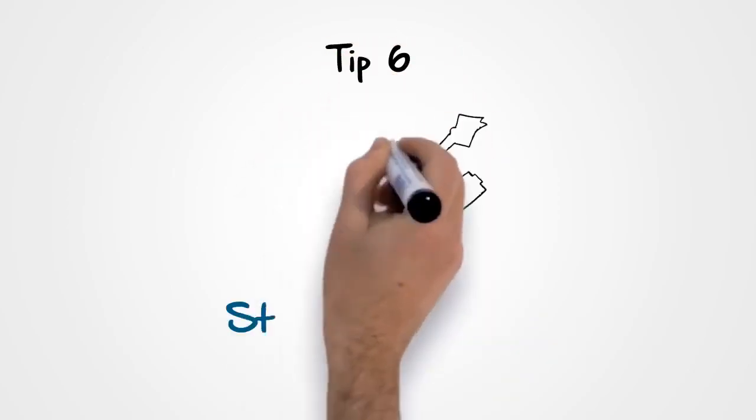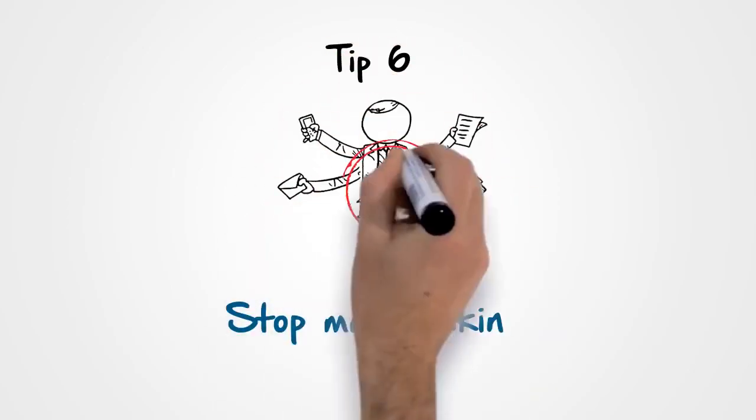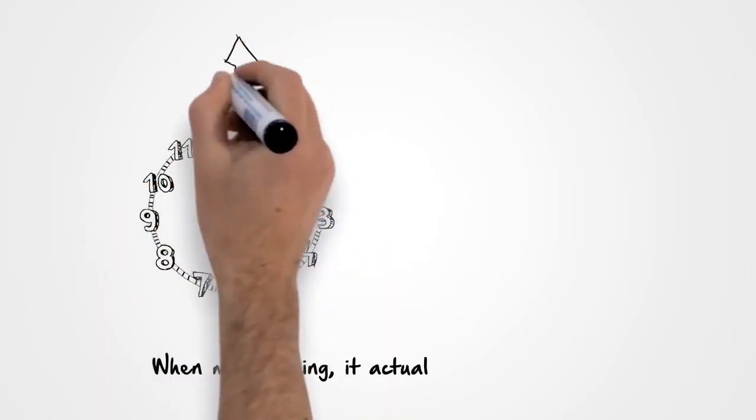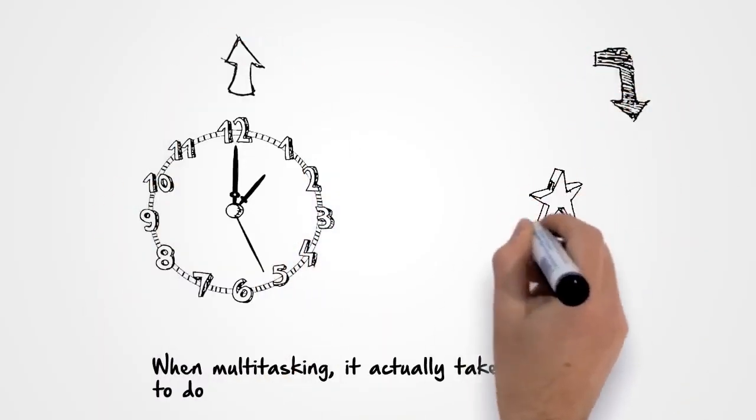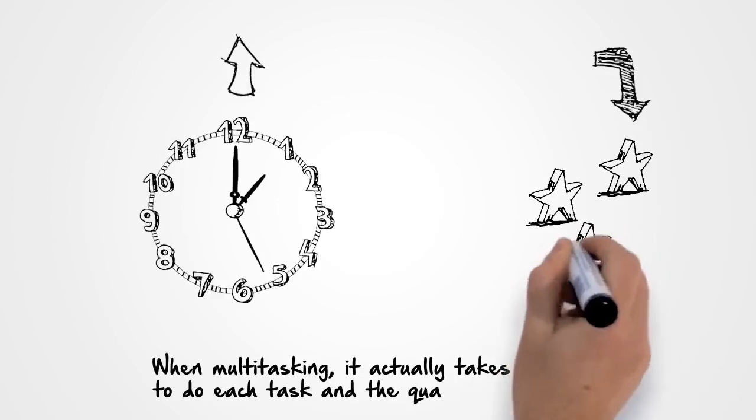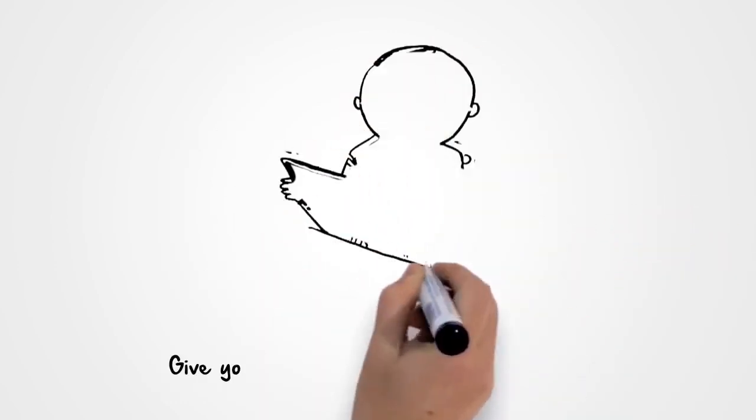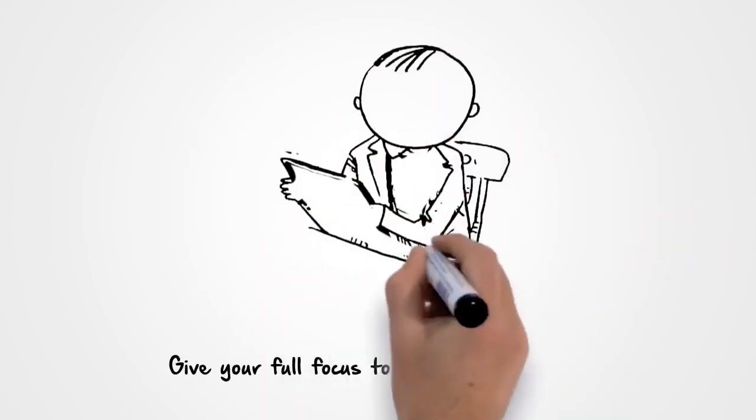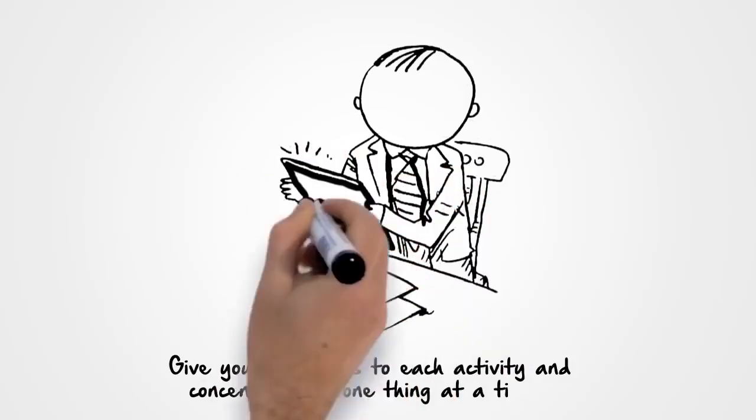Tip 6. Stop multitasking. When multitasking, it actually takes longer to do each task and the quality goes down. Give your full focus to each activity and concentrate on one thing at a time.